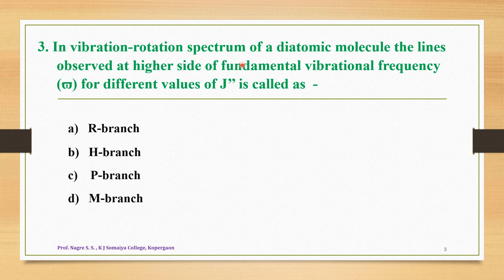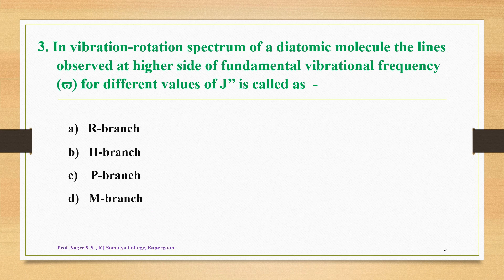Question 3: In the vibration-rotation spectrum of a diatomic molecule, the lines observed at the higher side of fundamental vibrational frequency (omega bar) for different values of J'' is called as — option A: R branch, option B: H branch, option C: P branch, option D: M branch. The correct answer is option A — these lines are called as the R branch.